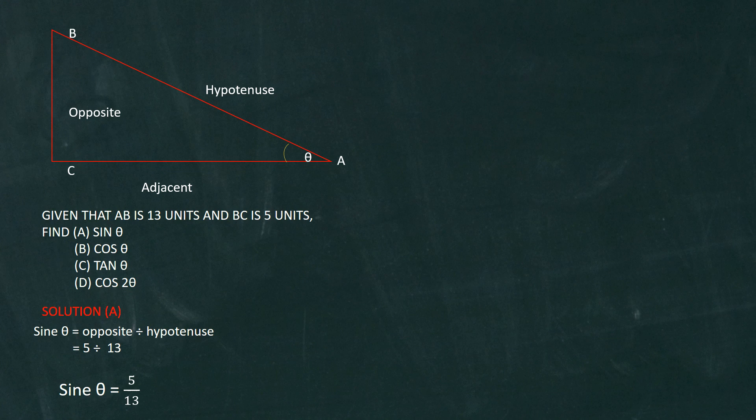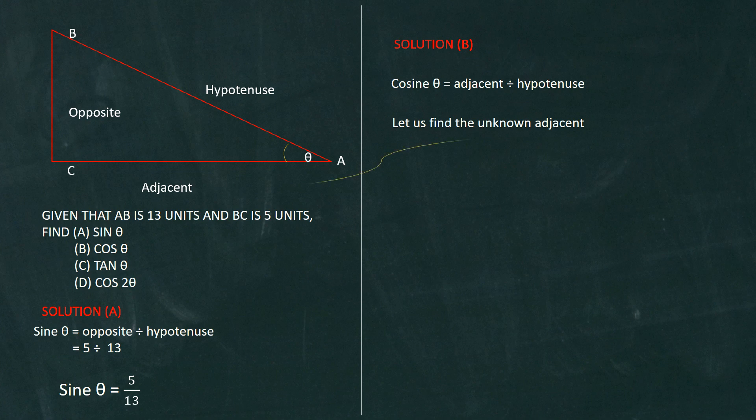Now let's look at part B. In part B, we're asked to find the cosine of theta. The formula for finding the cosine is always the adjacent divided by the hypotenuse. Now looking at this example, whereas we were given the opposite and the hypotenuse, we were not given the adjacent.